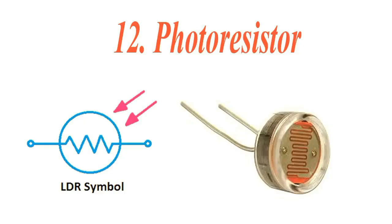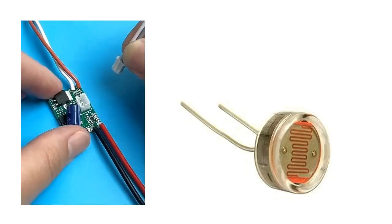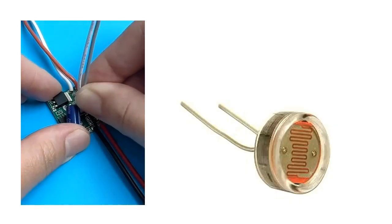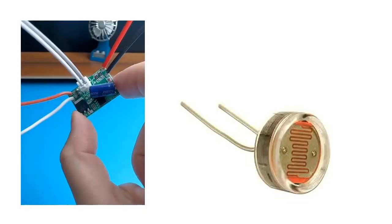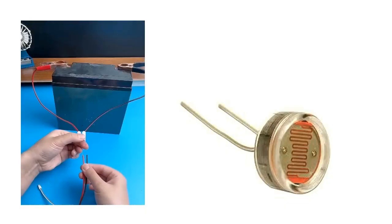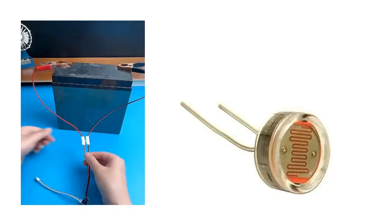Photoresistor. A light-dependent resistor or LDR changes its resistance based on light intensity. A photoresistor works by using the principle of photoconductivity, where its electrical resistance decreases as the intensity of light hitting it increases.